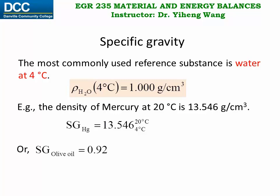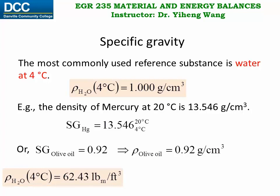Or if we know that the specific gravity of olive oil is 0.92, we can easily calculate its density to be 0.92 g per cubic centimeter. But if you prefer to use the American engineering unit system, we simply need to look up the density of water given in pound-mass per cubic foot, and we can also easily calculate the density of olive oil in pound-mass per cubic foot.